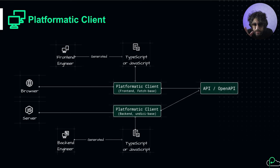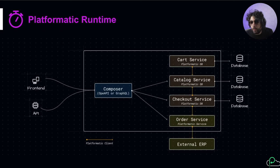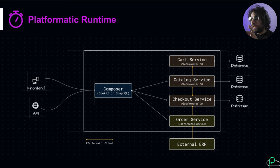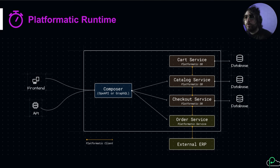You can just run a command and generate it - we'll see it in the code. Last but not least, we have Platformatic Runtime, which is the magic that allows it all to work together. It allows us to execute multiple microservices within the same Node process, enabling something unexpected. You can write them independently and then deploy as a monolith, and later decide to split them. So you can postpone the decision of microservices versus monoliths as late as possible.